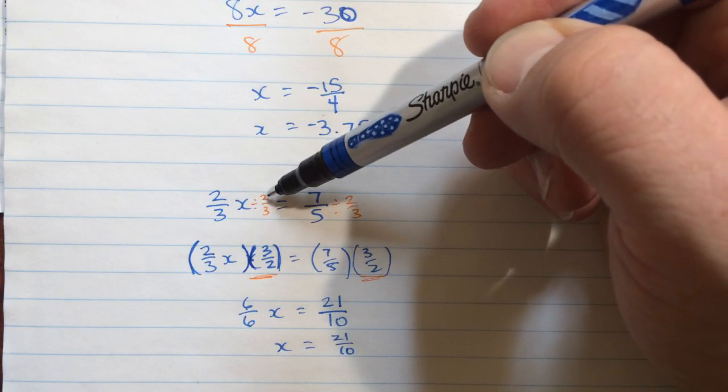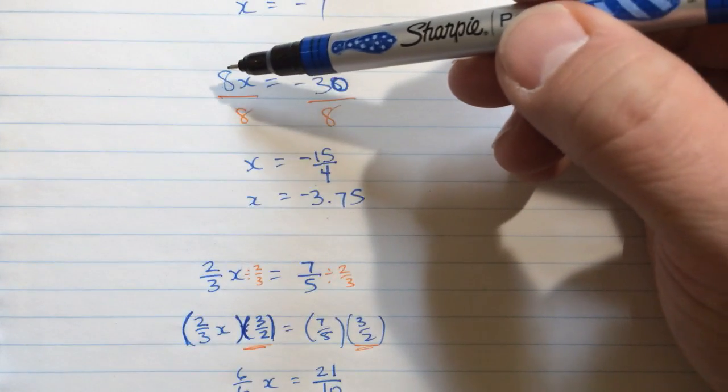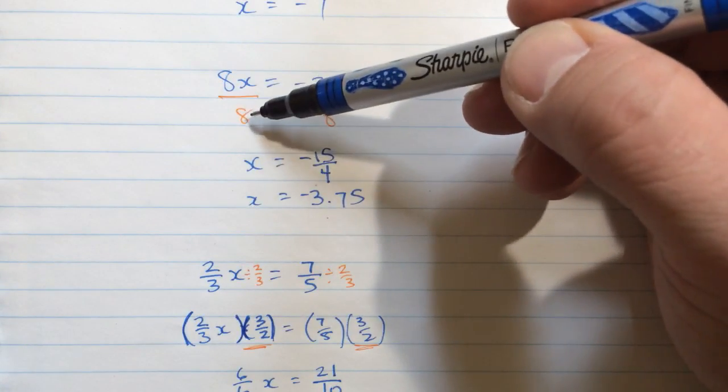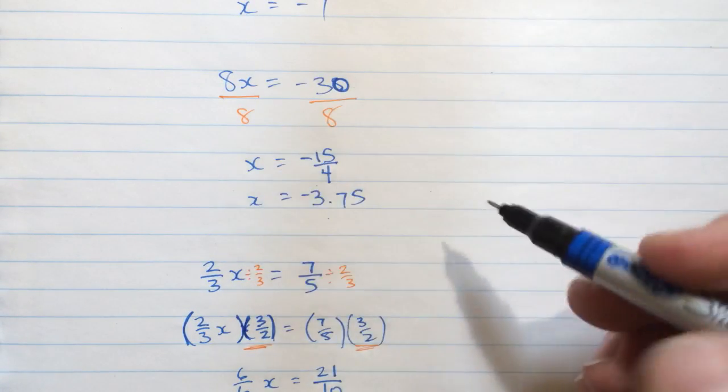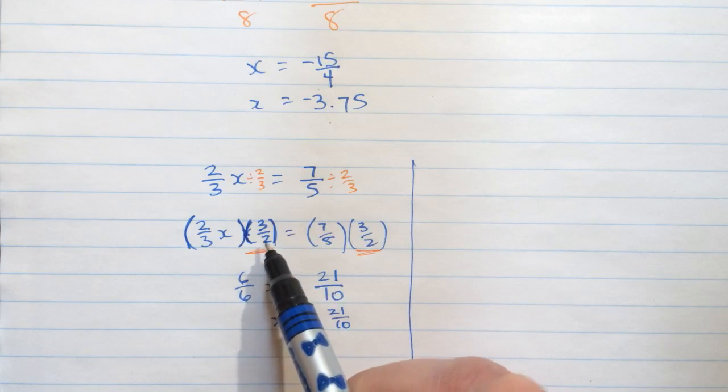So here, we divided by this same number that was out front, just like we did here when the number was a whole number, 8. We divided by 8. Here, we divided by the fraction. But instead,